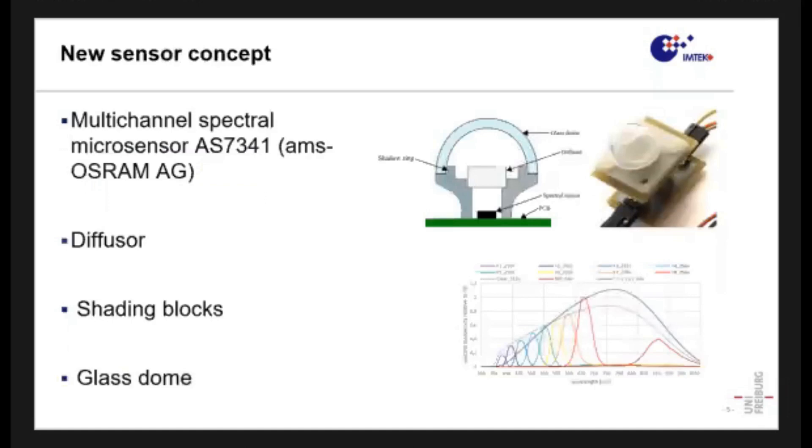So to overcome the limitations of the systems that are available and to achieve our vision, what we have developed is a very compact sensor which is based on a multichannel spectral micro sensor. This is a commercial one, and here is the characteristic of how it works and measures the light in eight visual channels in the frequency range of interest for us, the 400 to 700 nanometer, and gives us also information in the near infrared range. Additionally, we also have a diffuser which guarantees that the light that reaches the chip is homogeneously distributed.